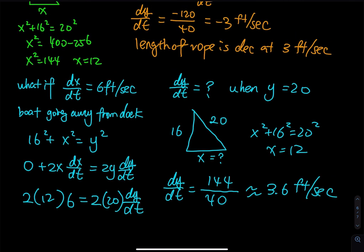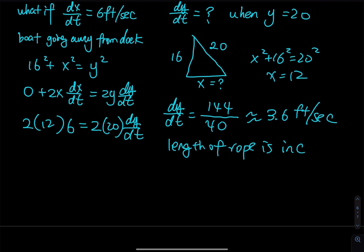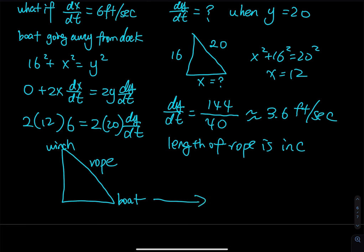In the previous problem, dy/dt was negative 3. This time it is positive 3.6. A positive dy/dt means the length of the rope is increasing. The boat is moving away from the dock, making the rope longer and longer — that's why dy/dt is positive.